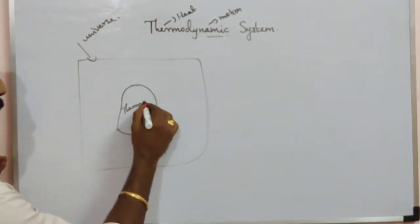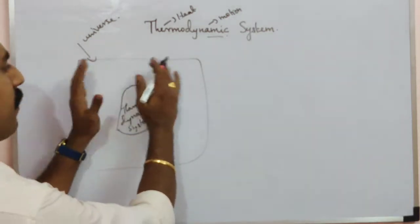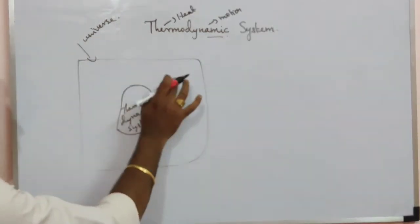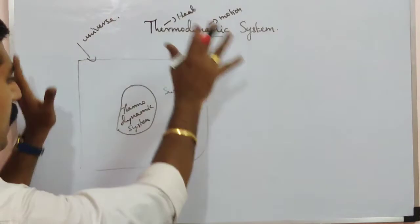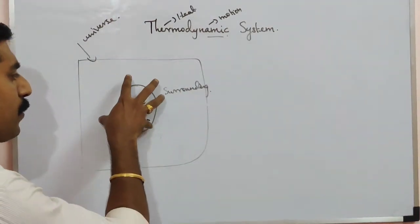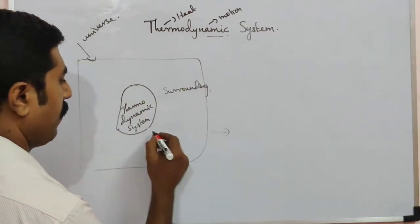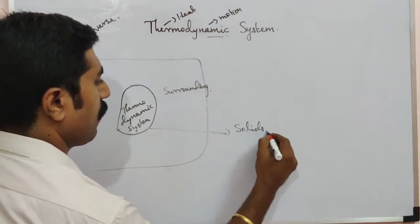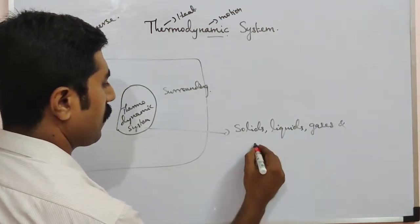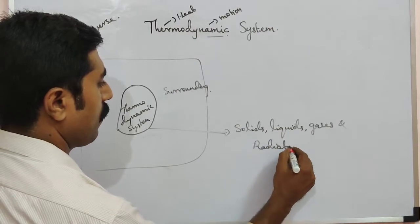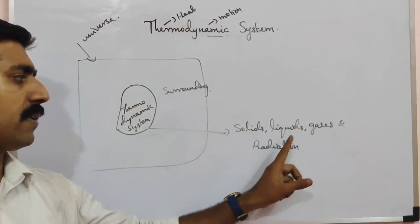In a thermodynamic system, there is a surrounding — the atmospheric air — and the universe. The thermodynamic system may include solids, liquids, gases, and radiation.